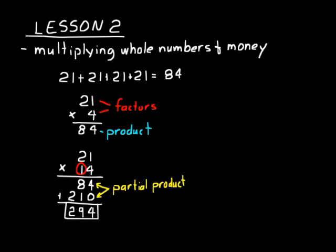Now let's try a multiplication problem involving money: fifteen times twenty-eight cents. Let's rewrite this vertically. Remember, the order doesn't matter in multiplication — we could have written this as twenty-eight times fifteen or fifteen times twenty-eight. We'll have two partial products that we add together. First, let's do fifteen times eight: eight times five is forty, so we have zero and carry a four. Eight times one is eight, plus four is twelve. So fifteen times eight is one hundred twenty.